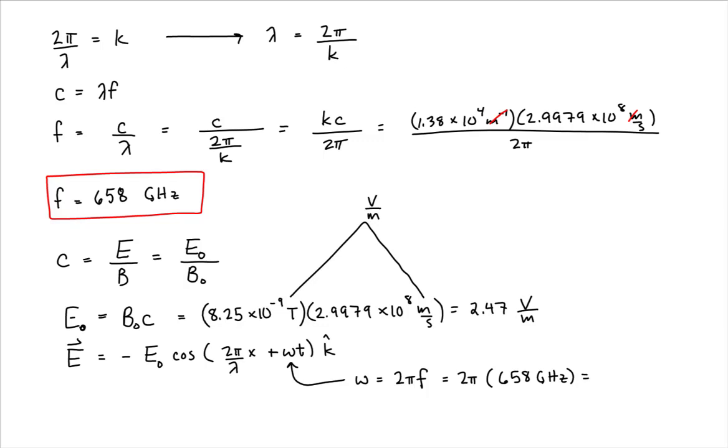We get 4.13 times 10 to the 12th radians per second. So that's extremely large. But that'll work for us for this problem because an electromagnetic wave of very short wavelength has a very high frequency of oscillation.